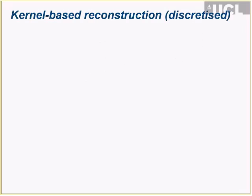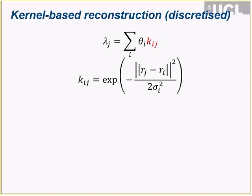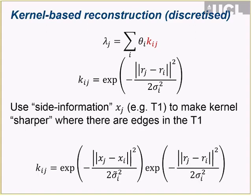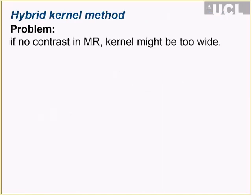In discretized space, the notation lambda is for a voxelized image. You go from your basis-function image to a voxelized image for display and forward projection. The x's are your MR image sampled at the same resolution, and you use the same type of formula. This has a potential problem: you might be over-smoothing — if there is no edge in the MR you might use a very wide basis function, but the PET contrast and MR contrast are not the same.